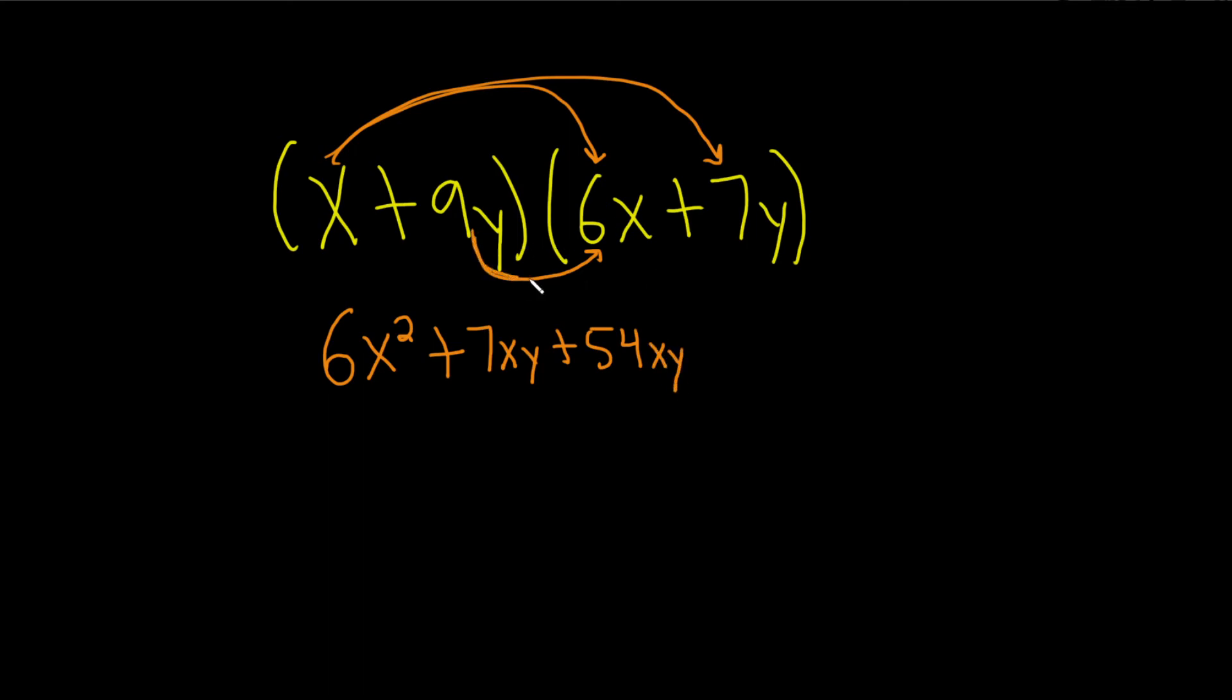And then at the end we do 9 times 7. That's 63. And then y times y is going to give us y squared. Good stuff.